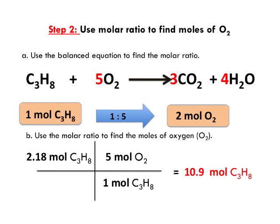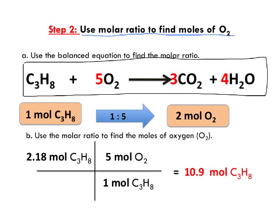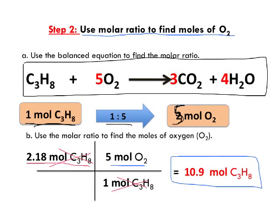Now we know how much propane we have. Step two is to use the molar ratio from the balanced equation. The ratio is one mole of propane to five moles of oxygen gas — the ratio is one to five. Using dimensional analysis, I've got my 2.18 moles of propane, moles of propane cancel out, and I'm left with moles of oxygen. That gives me 10.9 moles of oxygen. That's the end of step two.